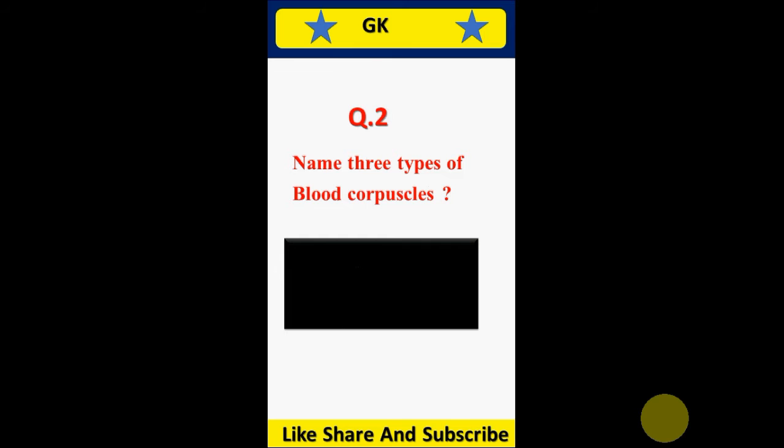Question 2. Name three types of blood corpuscles. Answer: RBC, WBC and platelets.